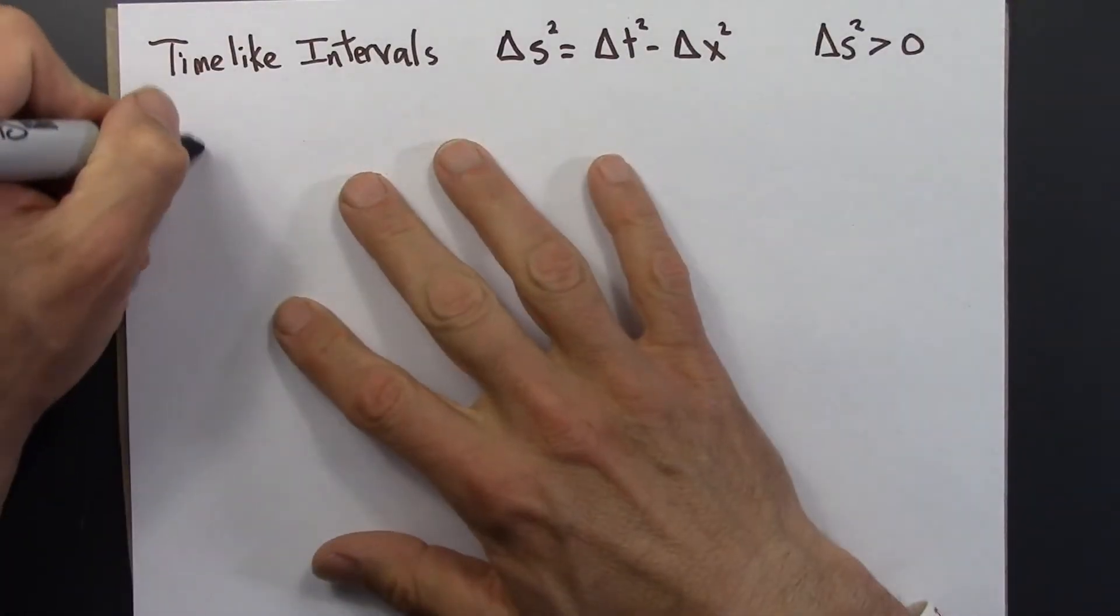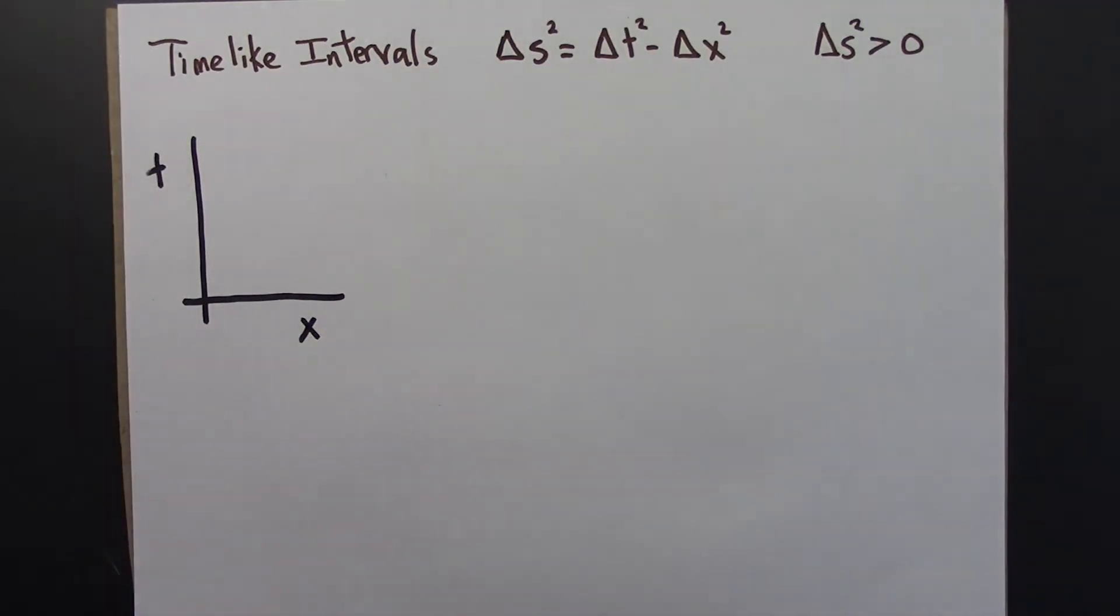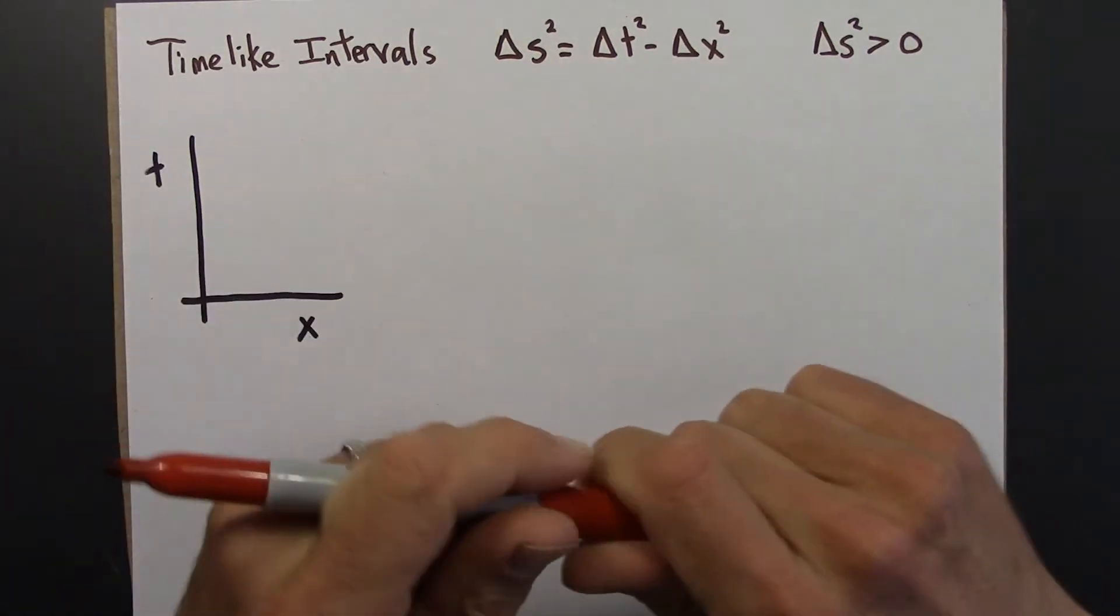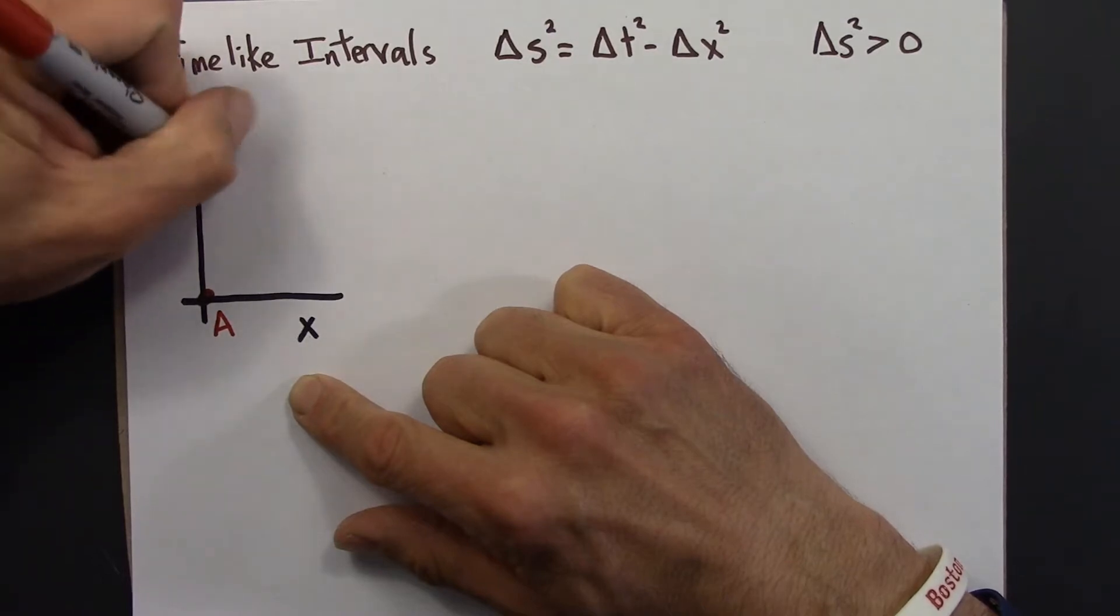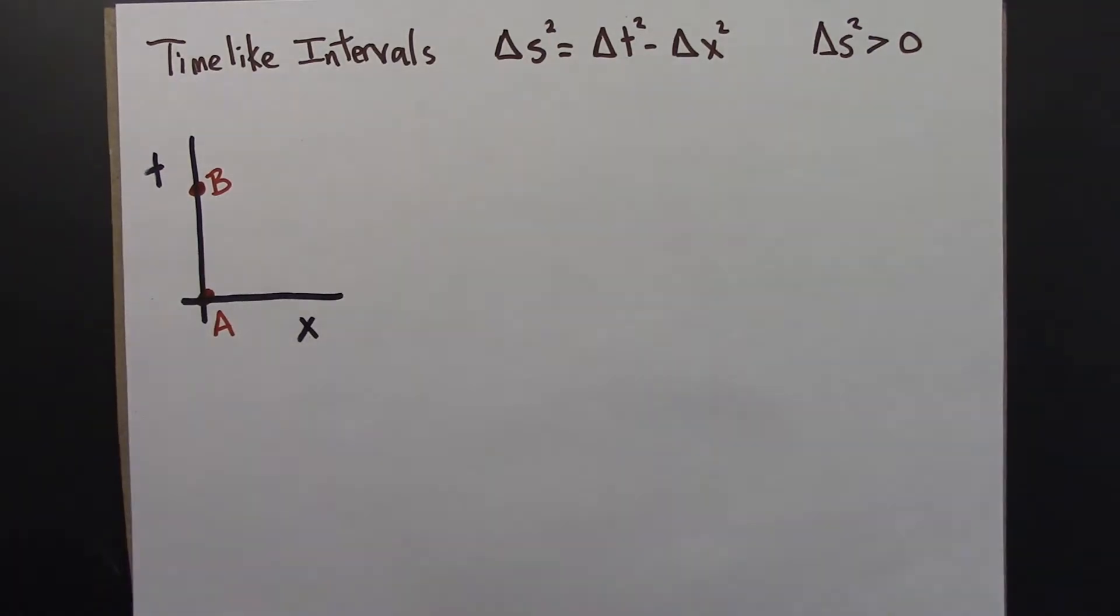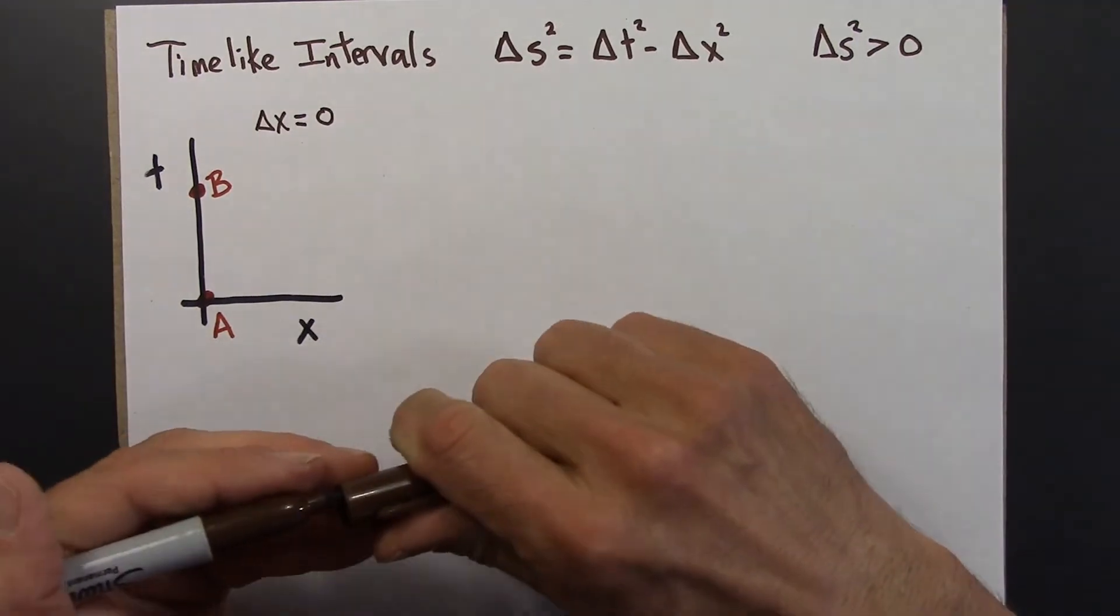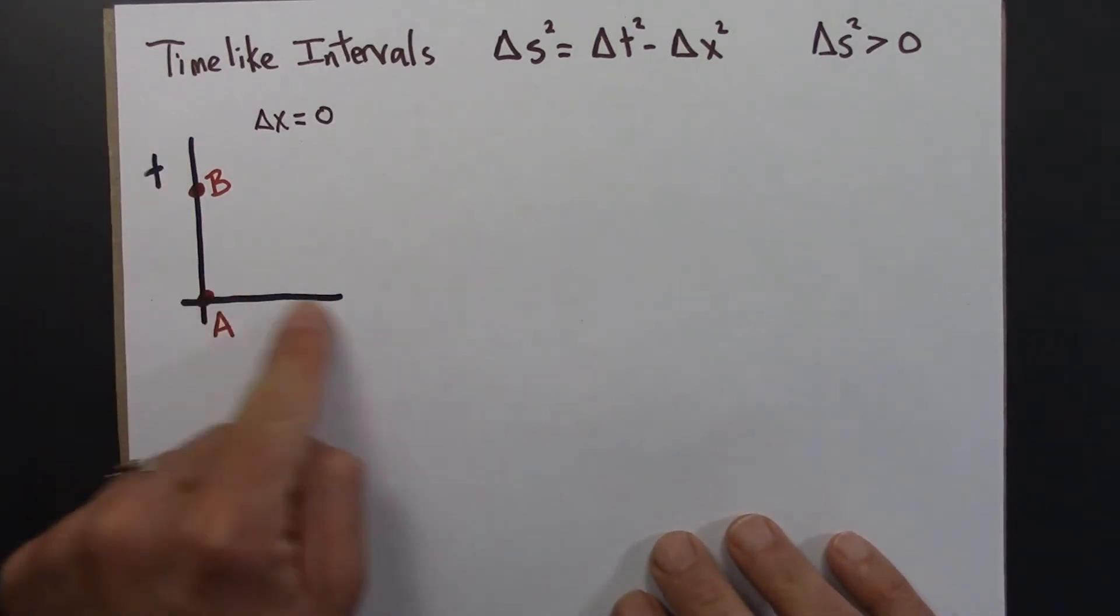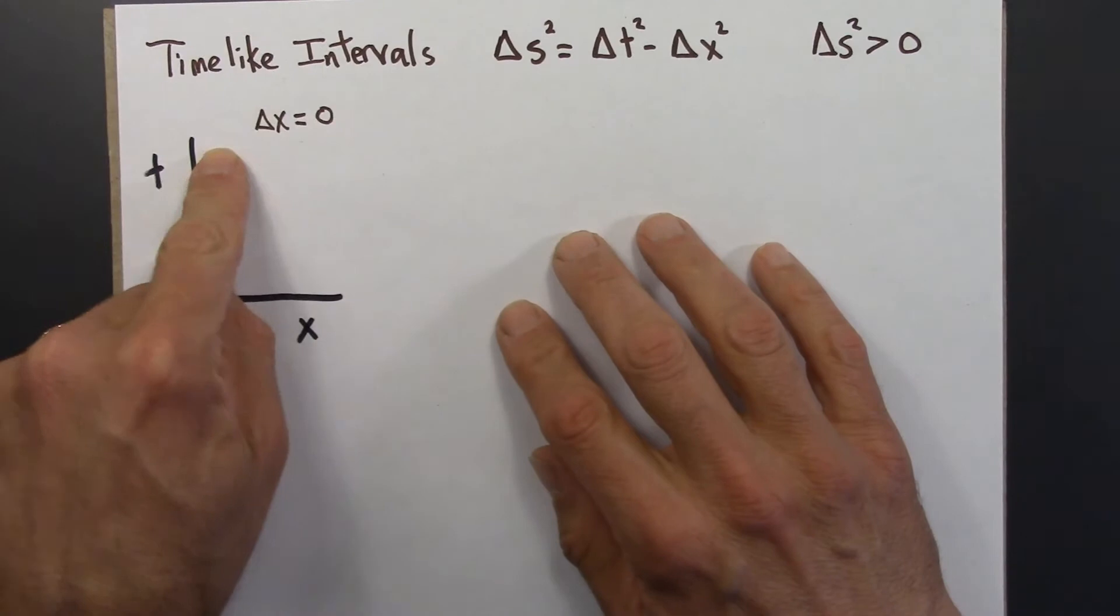Let's consider that case first. I'll draw a little space-time diagram with x and t axes. This interval is between two events, event A and B. Suppose delta x happens to be zero. Then the interval between A and B definitely looks like it's time-like. There's no delta x; the only thing that's changed from A to B is that they're at different times. This is the simplest case.